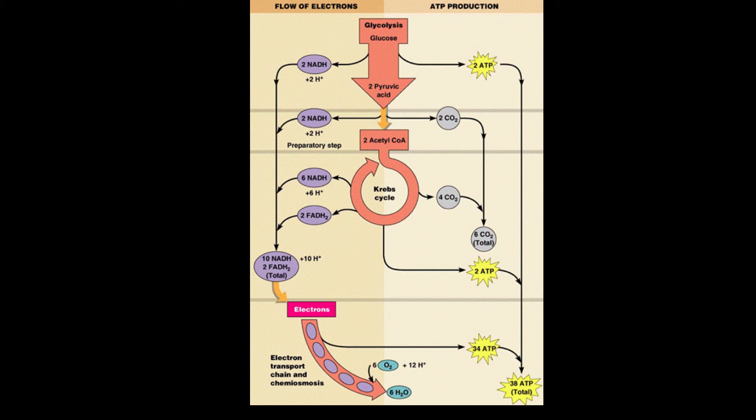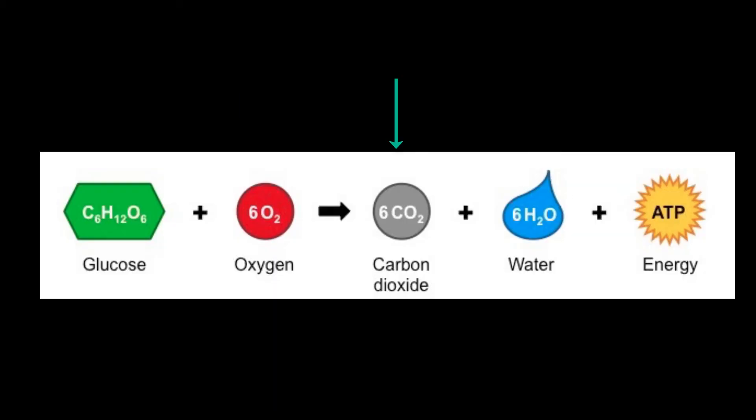We then go to the bridge between glycolysis and the Krebs cycle. At both the bridge and the Krebs cycle, carbon dioxide on the product side is produced. We basically moved the six carbons of glucose into the six carbons of carbon dioxide.